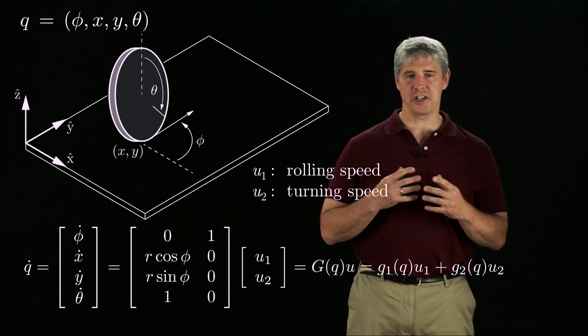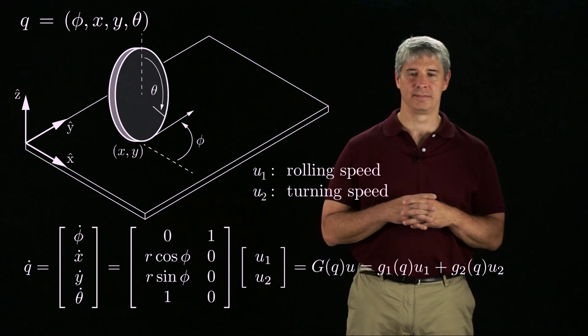Back to the example of the rolling wheel, which we also call a unicycle. The equation Q dot equals G of Q times U is the kinematic model of the unicycle.